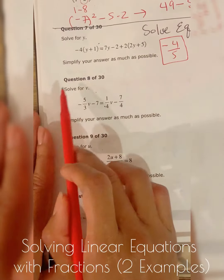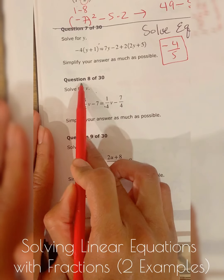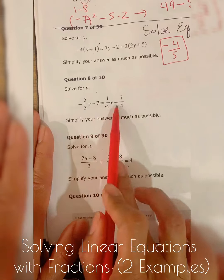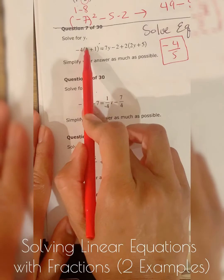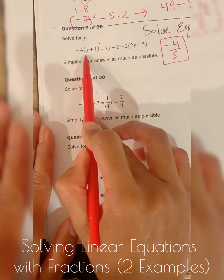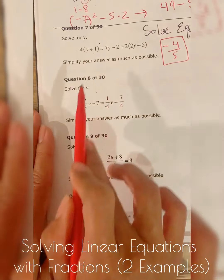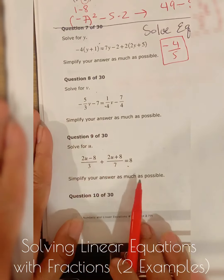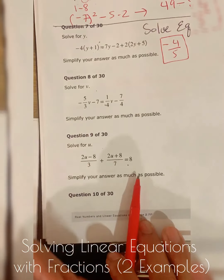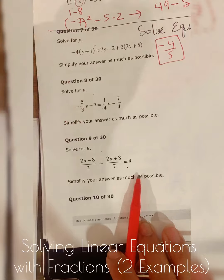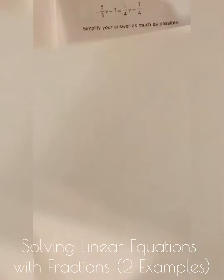Let's look at number eight. Number eight is a linear equation and it has fractions on both sides, whereas number seven did not. I went really slow on number seven, and here in question eight I'm going to go a little bit faster. If I'm going too fast, slow it down or go back to question seven to see me work through a problem more slowly.